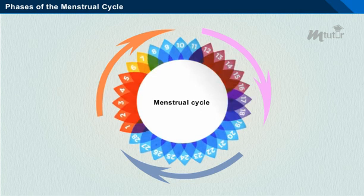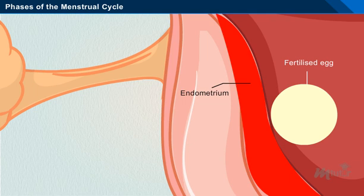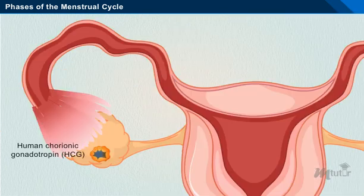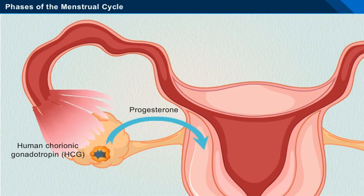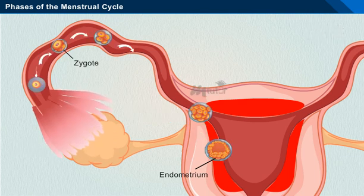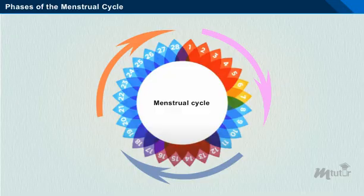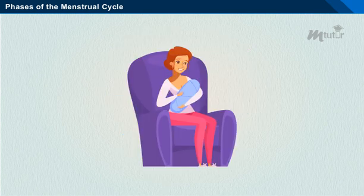Thus, a new menstrual cycle begins again. If the egg is fertilized and implants, or embeds itself in the uterus at about the 20th day of the cycle, the endometrium will help in nourishing the embryo, leading to pregnancy. The human chorionic gonadotropin (HCG) signals the corpus luteum to continue progesterone secretion, thereby maintaining the thick lining of the endometrium and providing an area rich in blood vessels in which the zygote can develop. When pregnancy occurs, menstruation ceases and the endometrium passes into a pregnancy phase. Once the baby is delivered, the ovarian and menstrual cycles resume after a variable period of about 6 to 10 weeks, based on the breastfeeding activity.